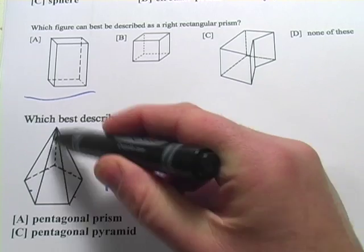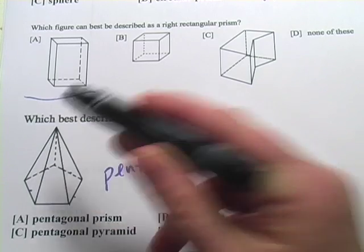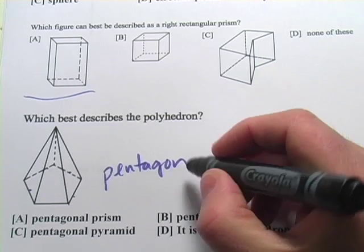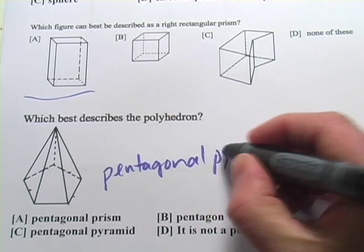And then all the lines here come up and come together at a point. That makes it a pyramid. So we call it a pentagonal pyramid.